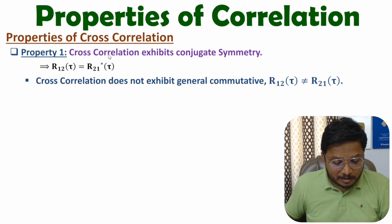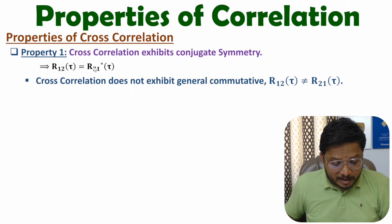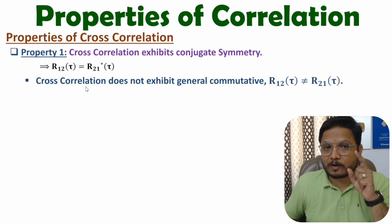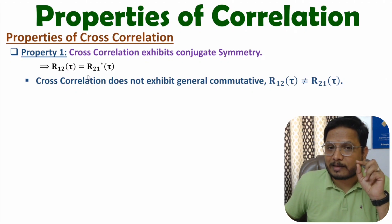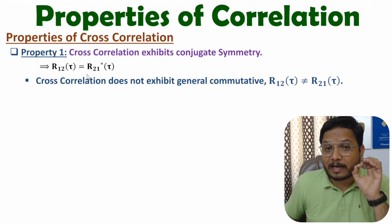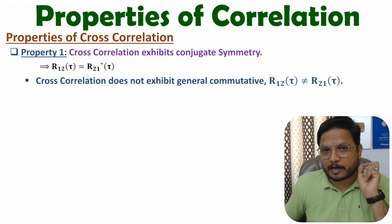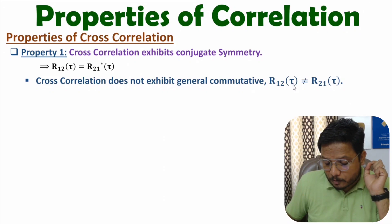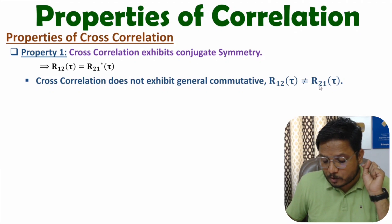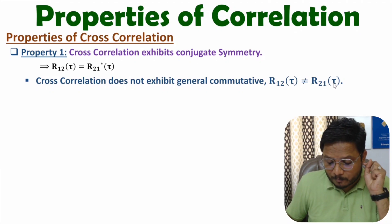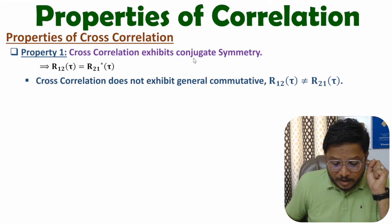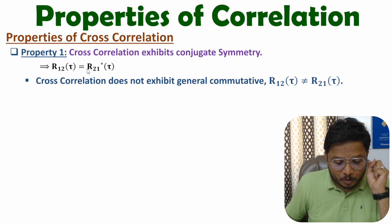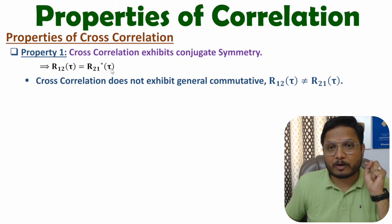Cross correlation exhibits conjugate symmetry, and one should know that cross correlation does not follow the commutative property in general — meaning R₁₂(τ) is not equal to R₂₁(τ). It follows conjugate symmetry: R₁₂(τ) equals R₂₁(τ) conjugate.